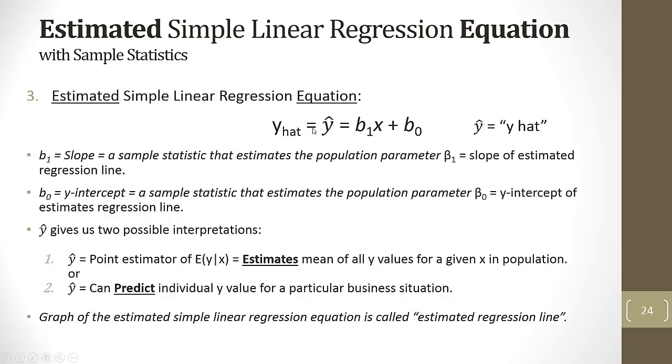If we go to slide number 24, we can see estimated simple linear regression equation. This is going to be with our population parameters for slope and y-intercept. So this will be called y-hat. I'm going to sometimes do it as y sub-hat or use the actual symbol. Sample statistic slope times x plus sample statistic y-intercept. Now, this value will predict two different things. If we want to estimate the population parameter, then y-hat will be the point estimator of expected population value of y given a particular x. That will be the mean of all the y values for a particular x in the population. But most of the time, we're going to be using y-hat to make predictions. Y-hat can predict an individual y value for a particular business situation.